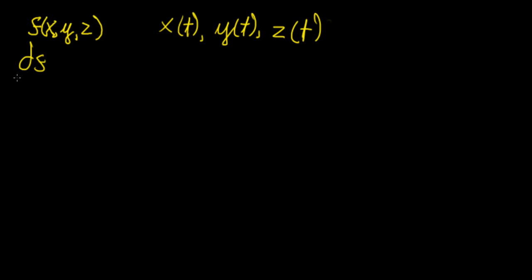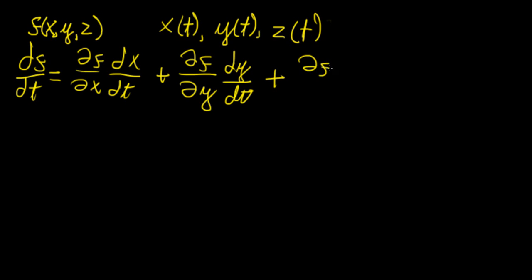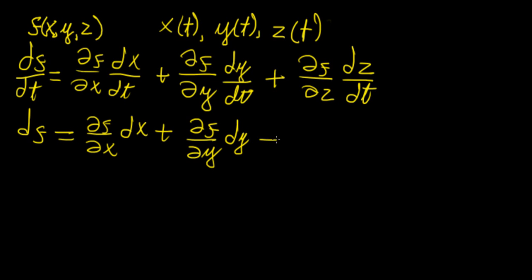So if we wanted to find the derivative of f with respect to t, what we do is apply the chain rule, which tells us we're going to get the partial of f with respect to x times dx/dt, plus the partial of f with respect to z times dz/dt. Another way of writing this is by multiplying both sides by dt, so we get the partial of f with respect to x times dx, plus the partial of f with respect to y times dy, plus the partial of f with respect to z times dz.